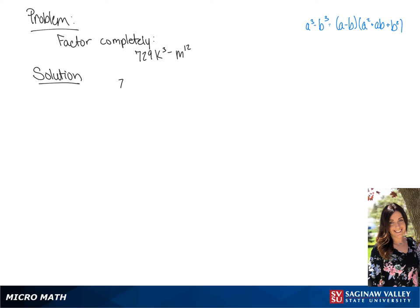We are going to factor 729k cubed minus m to the twelfth. We are going to find our a term, which is the cubed root of 729k cubed, which is 9k.